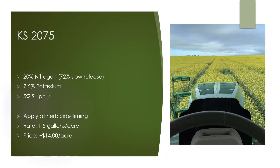Let's look at some of the other products. Remember that XRN is the base for all of these. First up is KS 2075 — this might be our most common product used in Western Canada because it works great on so many crops, including cereals, canola and pulses. It's 20% nitrogen, of which 72% is slow release. In addition to nitrogen, you also get two other important nutrients: 7.5% potassium and 5% sulfur. You apply it at herbicide timing at 1.5 gallons an acre, and the rough cost is $14 an acre.